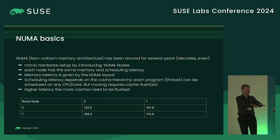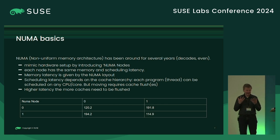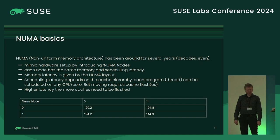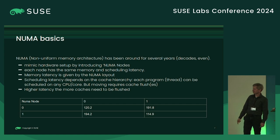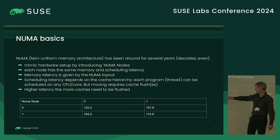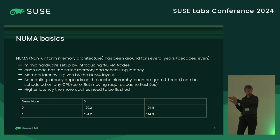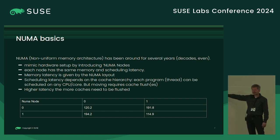On x86, we can actually measure this. There is a tool from Intel called MLC — the Memory Latency Checker — which checks the latency of individual NUMA nodes. Looking at results from one machine: accessing memory from the same node on node zero gives a latency of 120 nanoseconds; on CPU one, it's 114 nanoseconds — curiously asymmetric. But accessing off-site memory shows increased latency from the QPI link. You can actually measure that difference.